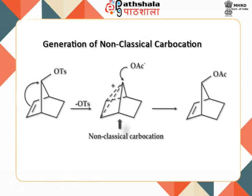Let us now learn how non-classical carbocations can be generated. During the acetolysis of anti-7-norbornyl tosylate, the tosyl group is removed with strong anchimeric or neighboring group assistance by the double bond. This results in the formation of a non-classical carbocation as the intermediate. It is important to note that the stereochemical configuration is retained in such a case.